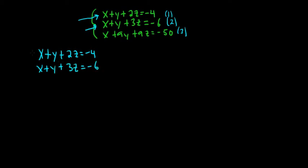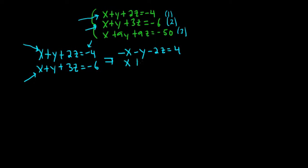So the question is, what can you multiply this one by so that when you add it to this one, the x's go away? Negative 1. So multiplying by negative 1, we have negative x, negative y, negative 2z equals 4 — because negative times negative is positive. Then here we have x plus y plus 3z equals negative 6.